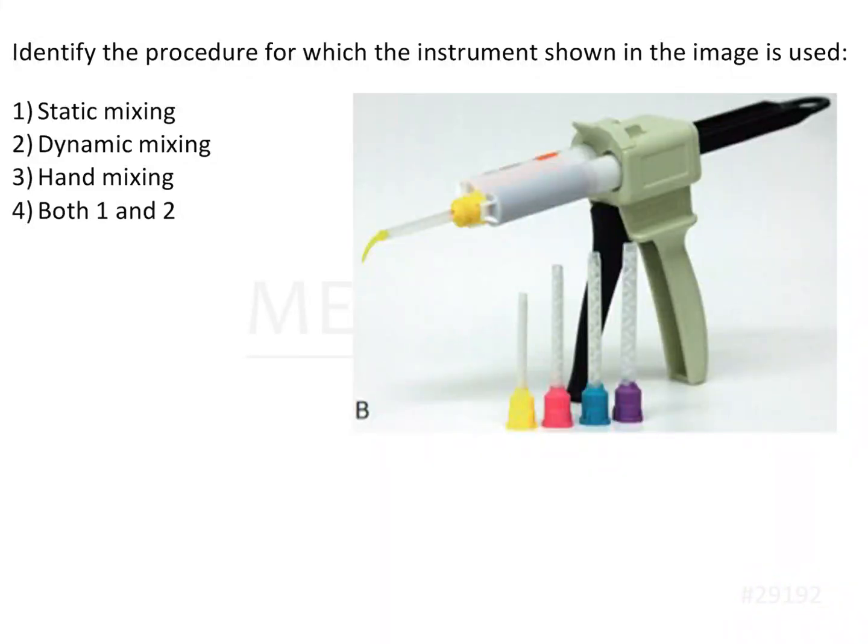Identify the procedure for which the instrument shown in the image is used. Here we have an instrument. This is the gun for dispensing a material. This is a cylindrical cartridge of the material. This is a mixing tip. This is a thin dispensing tip.